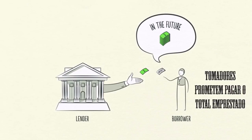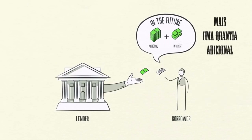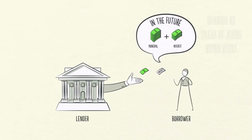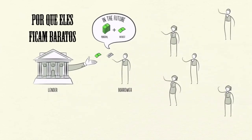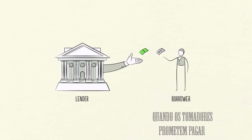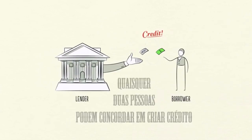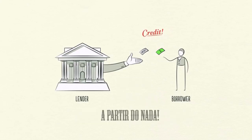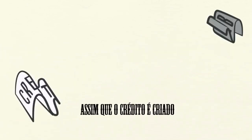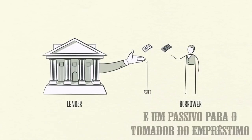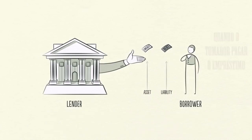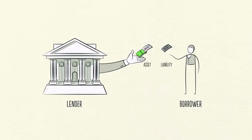Borrowers promise to repay the amount they borrow, called principal, plus an additional amount, called interest. When interest rates are high, there is less borrowing because it's expensive. When interest rates are low, borrowing increases because it's cheaper. When borrowers promise to repay and lenders believe them, credit is created. Any two people can agree to create credit out of thin air. As soon as credit is created, it immediately turns into debt. Debt is both an asset to the lender and a liability to the borrower. When the borrower repays the loan plus interest, the asset and the liability disappear and the transaction is settled.